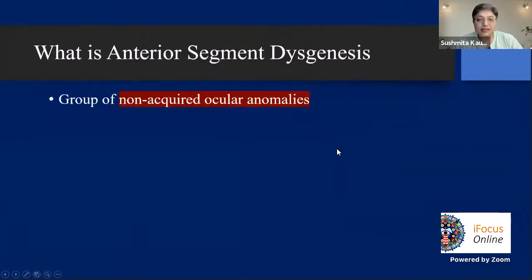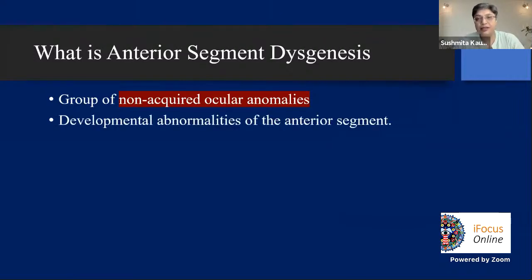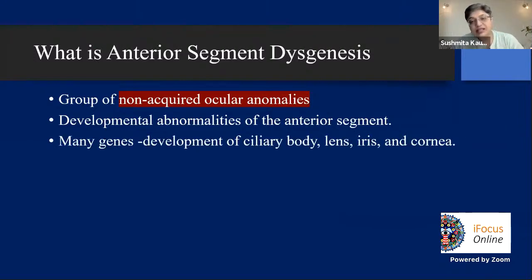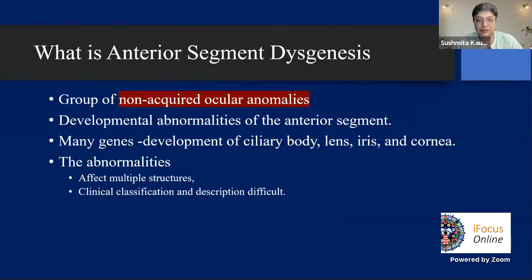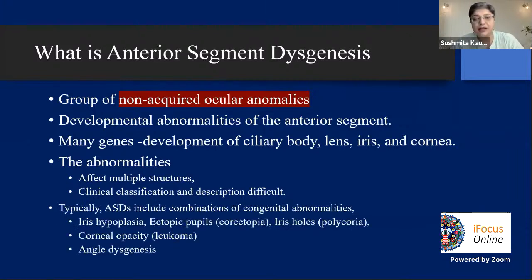Anterior segment dysgenesis is an umbrella of non-acquired ocular anomalies with developmental abnormalities of the entire anterior segment. Many genes are responsible for development of the ciliary body, lens, iris, and cornea — and are also responsible for developmental abnormalities. They affect multiple structures, making clinical classification challenging. Anterior segment dysgenesis includes combinations of iris hypoplasia, ectopia pupillae, iris holes, corneal opacities, and angle dysgenesis — mix and matches of each giving the conditions you read about in textbooks.